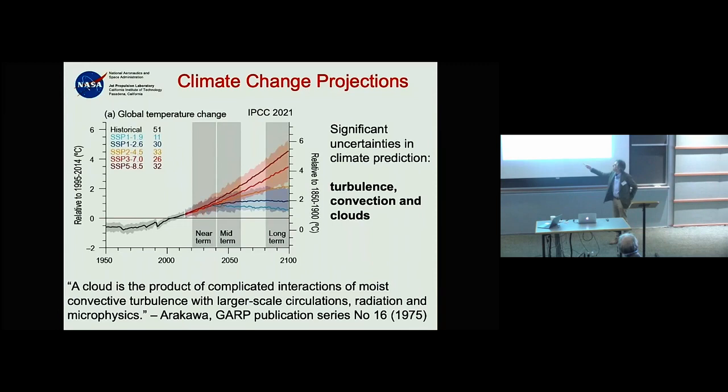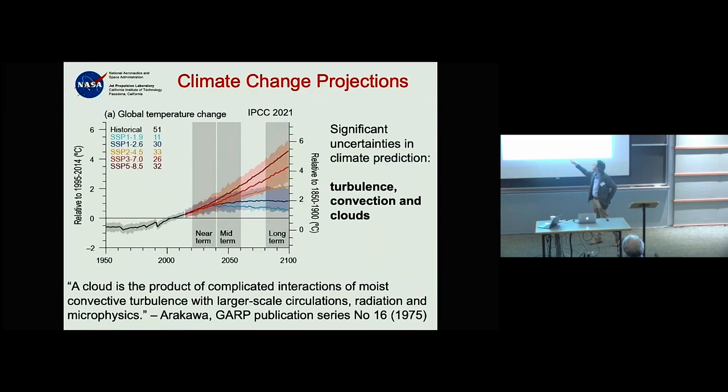This shows observations through past and present climate and then predictions. There are two things everybody highlights: one is that the different colors represent different scenarios — basically different amounts of greenhouse gases in the atmosphere — and the differences are enormous.